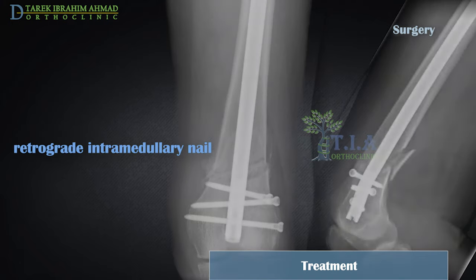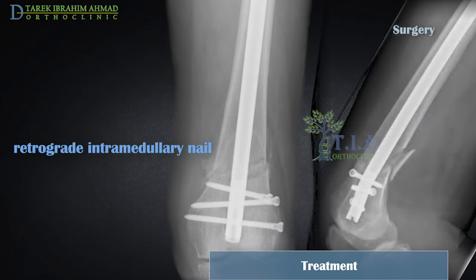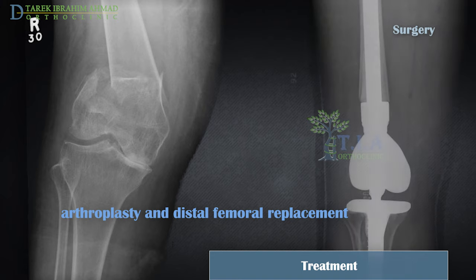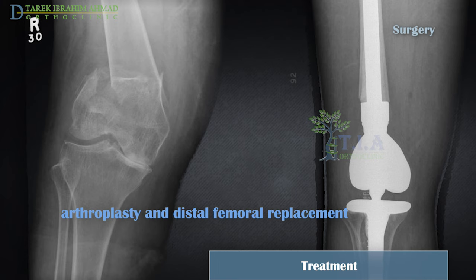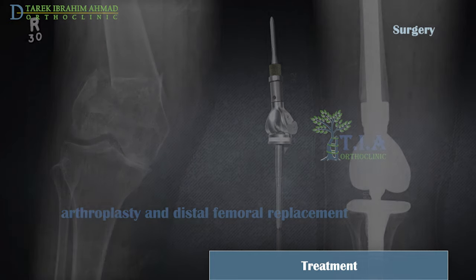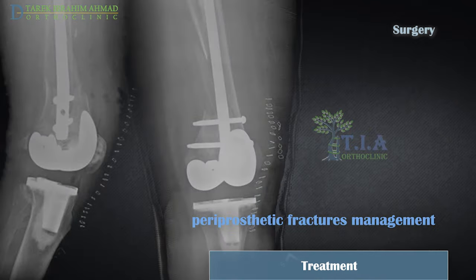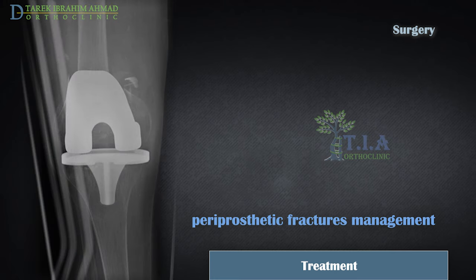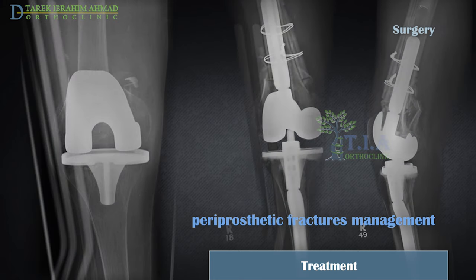Intramedullary nailing: during this procedure, a specially designed metal rod is inserted into the marrow canal of the femur. The rod passes across the fracture to keep it in position. In extreme cases, a fracture may be too complicated and the bone quality too poor to fix. These types of fractures are often treated by removing the fragments and replacing the bone with a knee replacement implant. Fractures near knee implants may be treated with rods or plates, just like other distal femur fractures. In rare cases, the artificial implant must be removed and replaced with a larger implant, which may be necessary if the implant is loose or not supported by surrounding good bone.